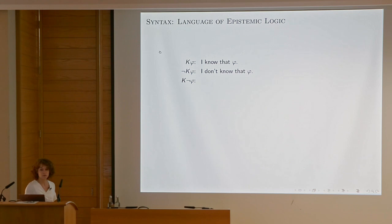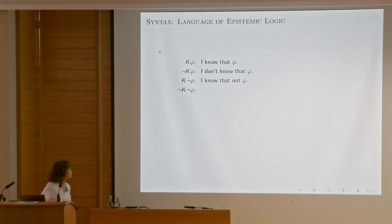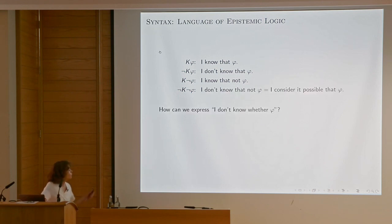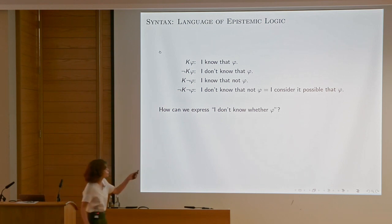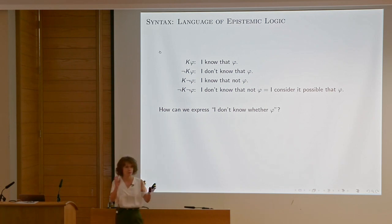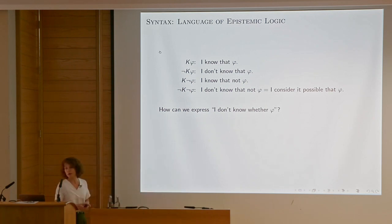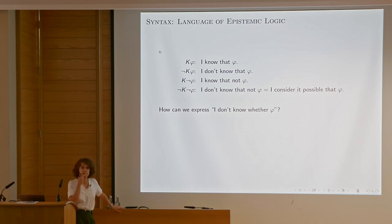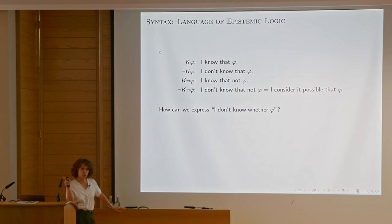Not-Kφ means I don't know that φ. K(¬φ) means I know that not-φ. This is actually the same as saying I consider it possible that φ via our previous metaphor. So we can express 'I don't know whether φ' as: it's not the case that I know φ, and not the case that I know ¬φ.